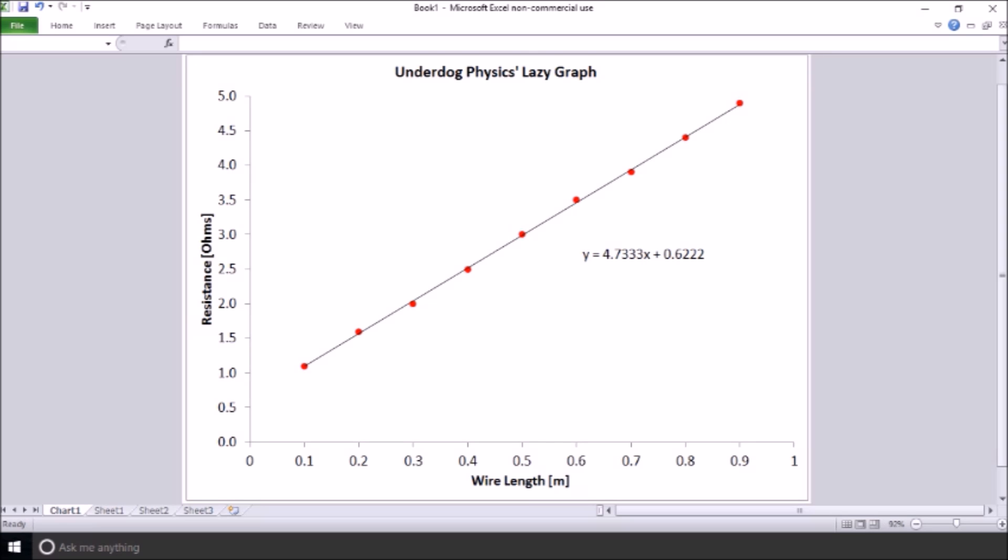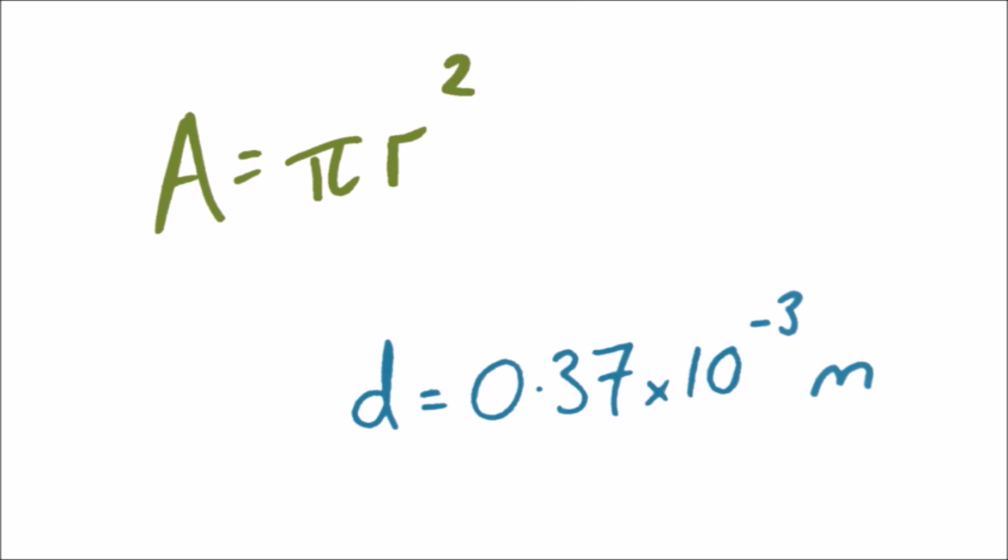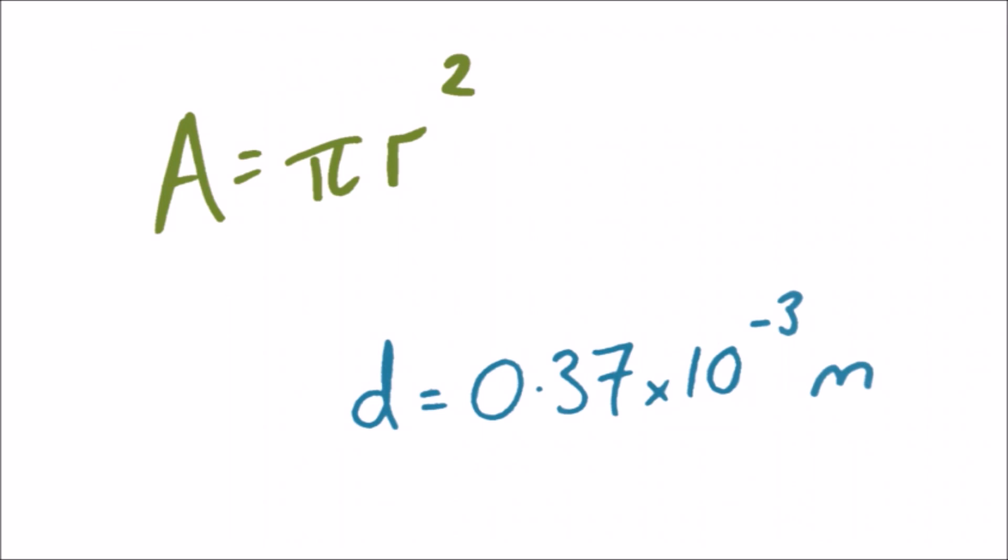Using the equation for the area of a circle and my average wire diameter, I'll find out the cross-sectional area of the wire. I won't show you how to do this part. You lazy little gremlins! And likewise you'll want to determine a value for the uncertainty in your measurement, which I won't do here, as it's not the point of this video.